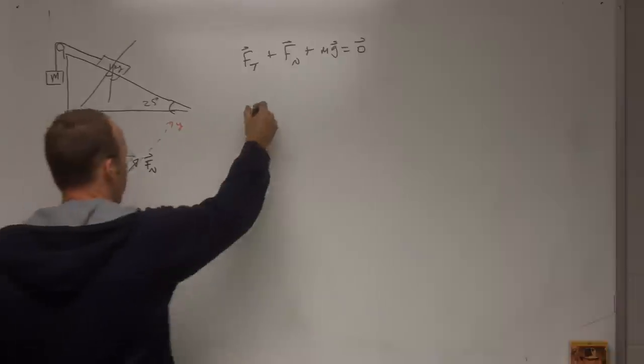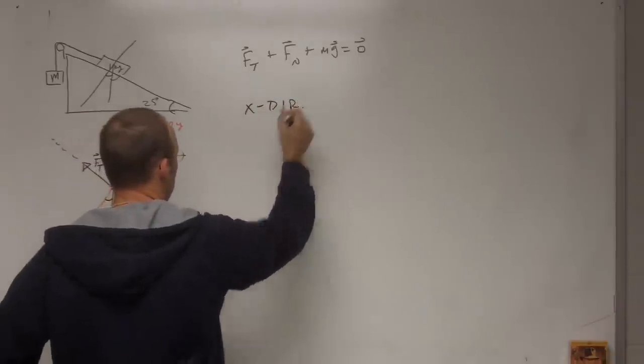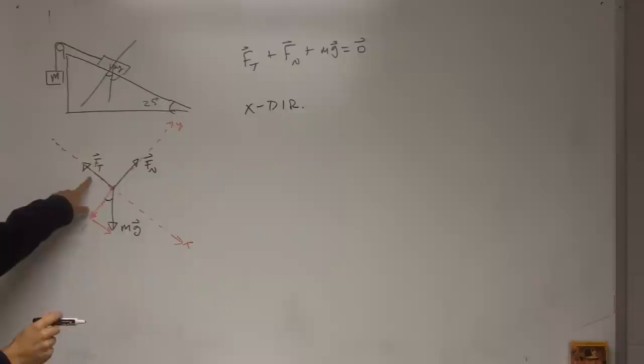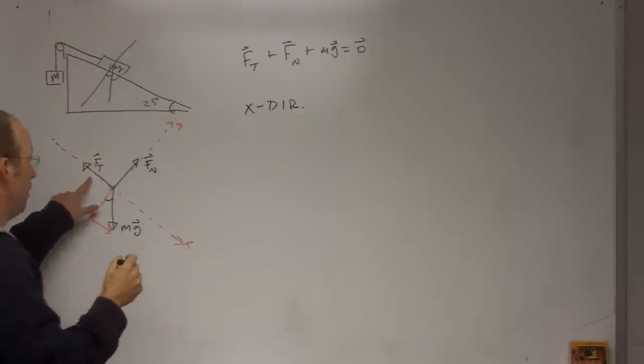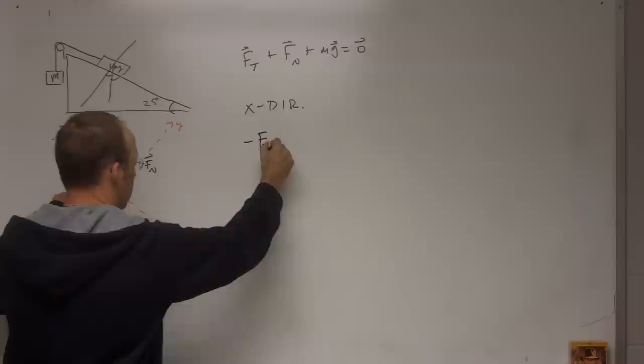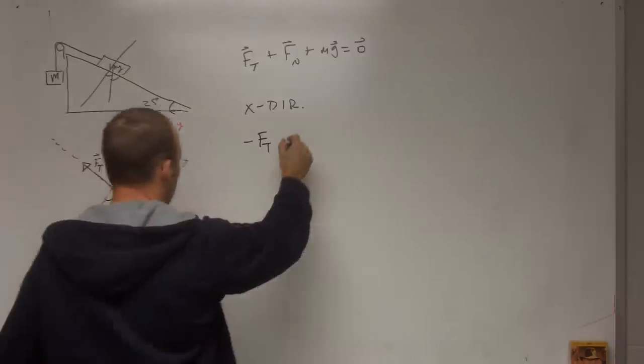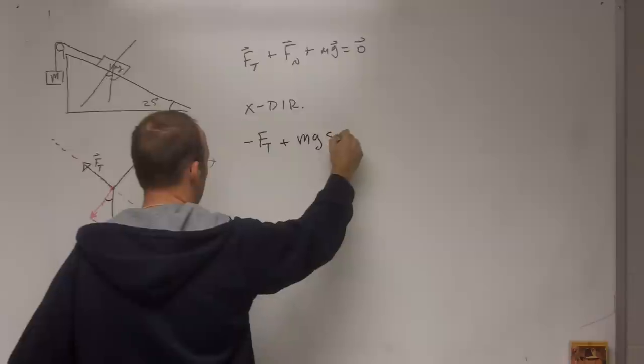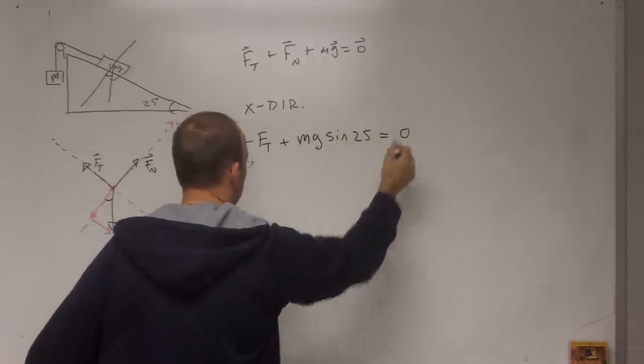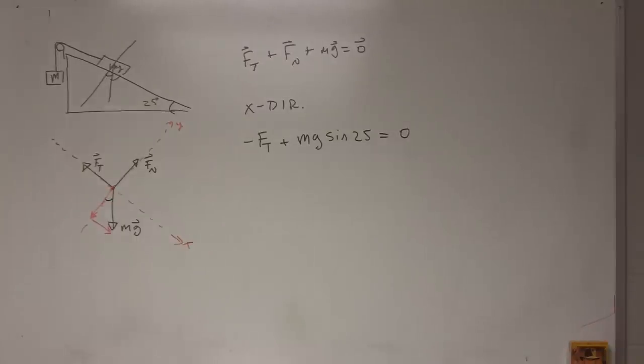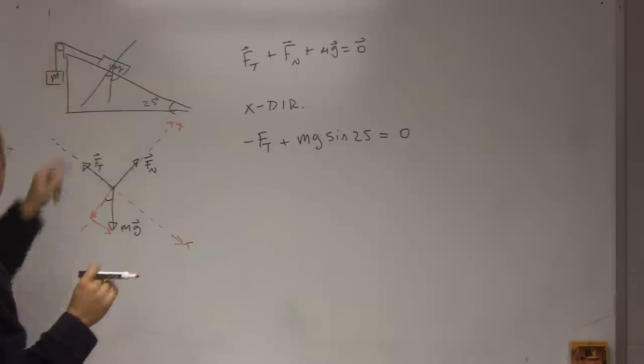Okay, so in the x direction I have what forces? Well, I have a component for tension in the negative x direction, negative Ft, and then I have mg in the positive x direction. How much? Well, that's the opposite side of the triangle, so it's going to be plus mg sin 25, and that's it.